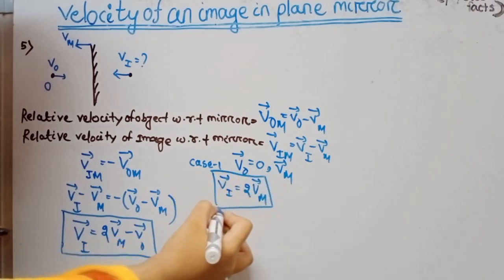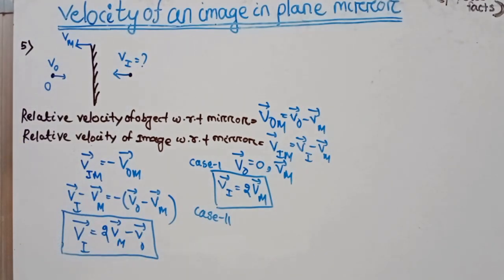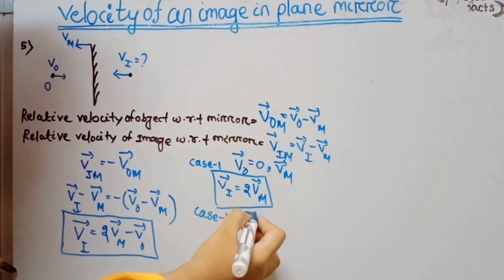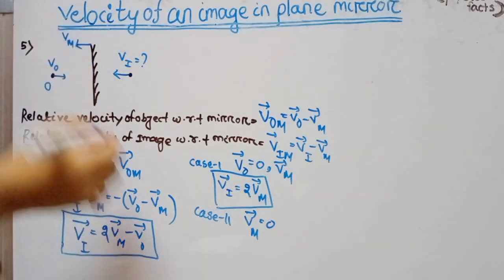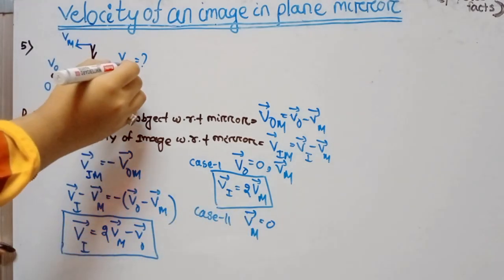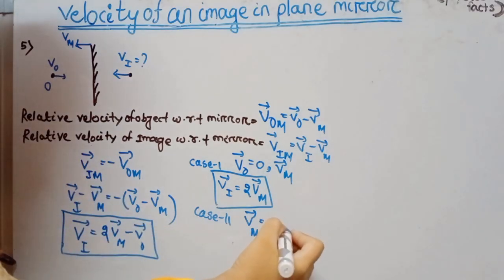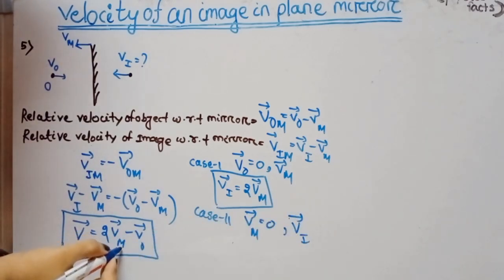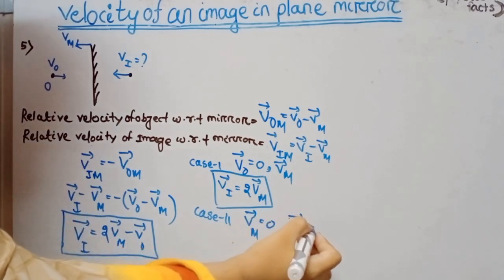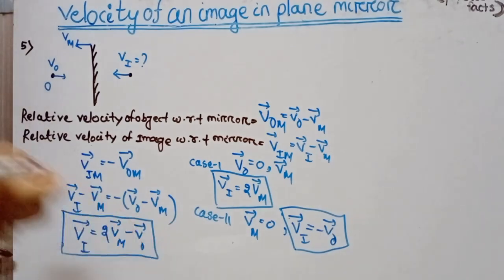Case 2: If the mirror is at rest (Vm = 0), then Vi = 2(0) - Vo = -Vo. The velocity of the image equals the negative of the velocity of the object. This case is similar to Case 1 from the basic treatment.